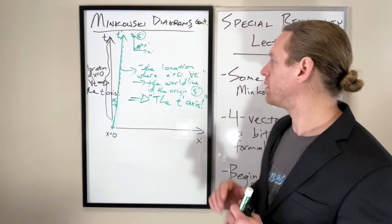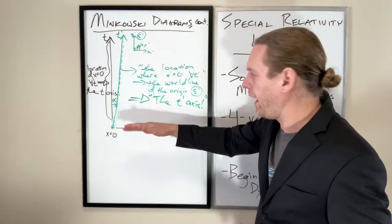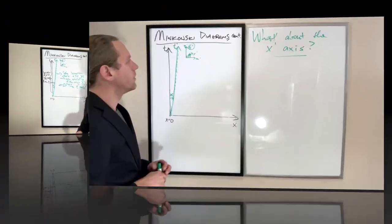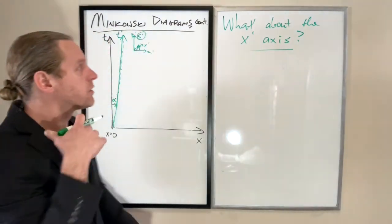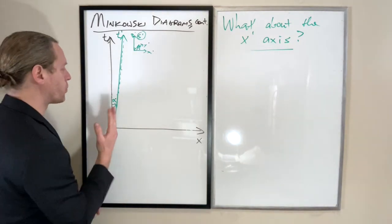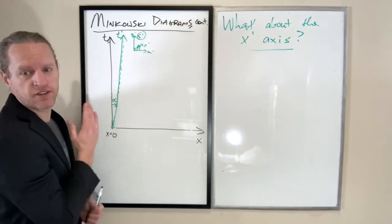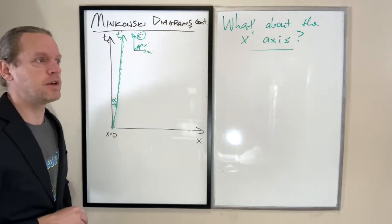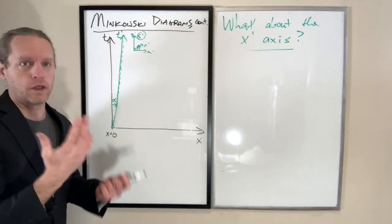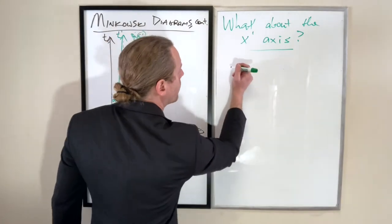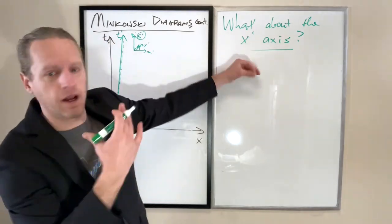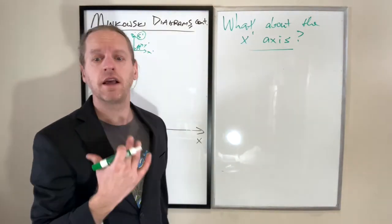Now the next question becomes: what about the x-axis in the s-prime frame? I'm going to take a very different route to derive this here. We used reasoning about world lines to indicate the origin location. Now I'm going to use an analytic approach based on the Lorentz transformations as we know them.